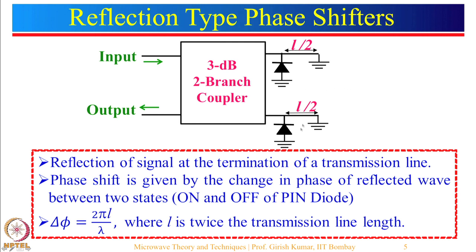As we change the biasing voltage, the capacitance will change. At the reflection point, the reflection coefficient gamma equals Z_in minus Z_0 divided by Z_in plus Z_0. Here Z_in is the capacitive impedance equal to minus j times X, or Z equals minus j divided by omega C. The reflected wave experiences a phase delay given by tan inverse of X by Z_0, and twice that. This will be shown in more detail in the next slide.